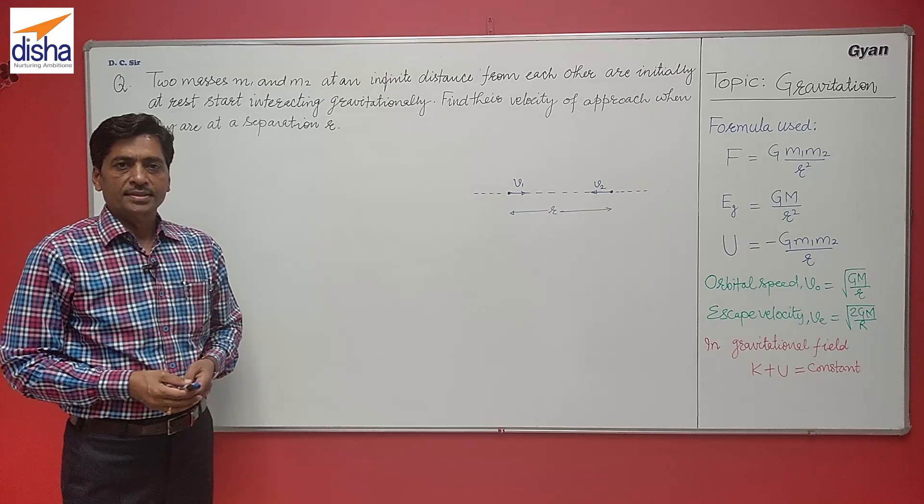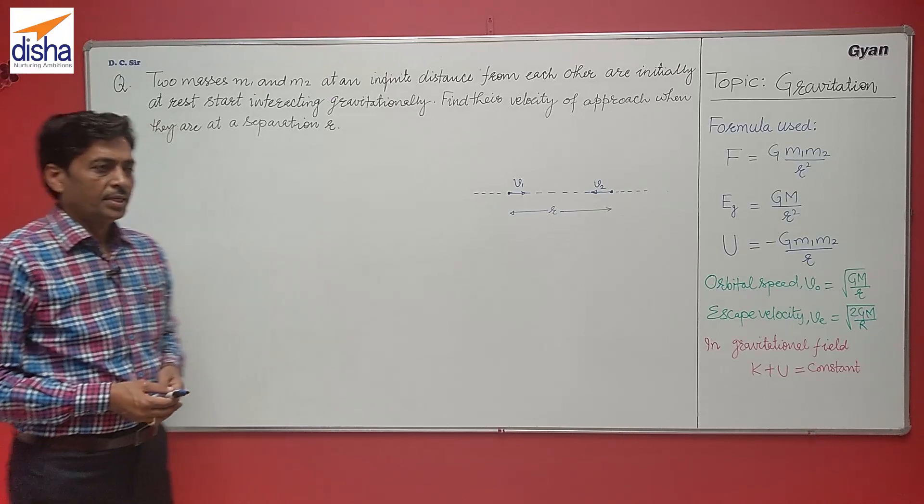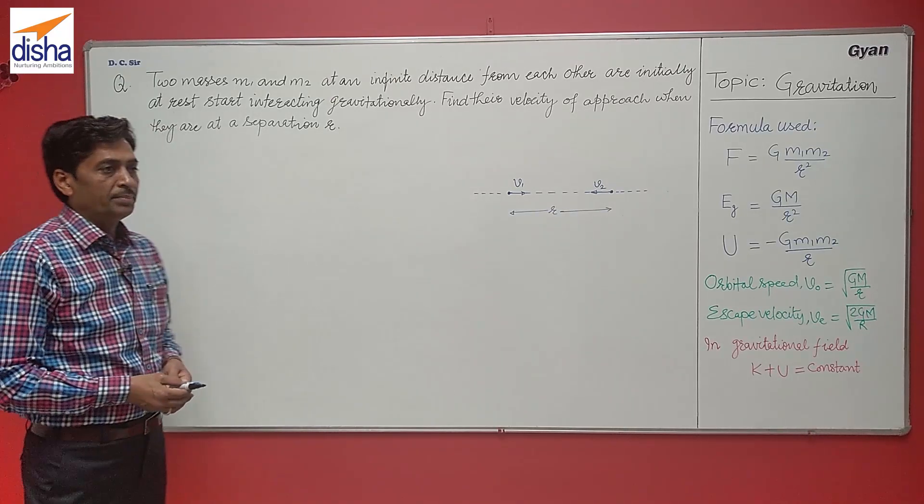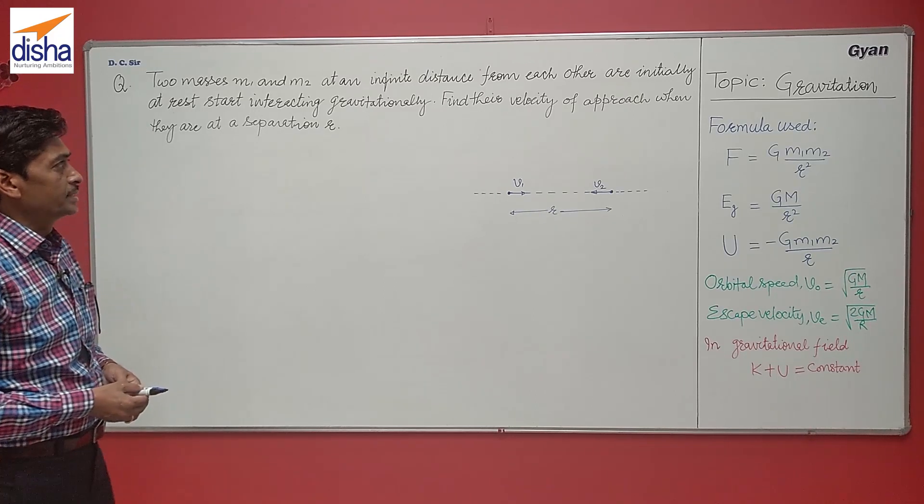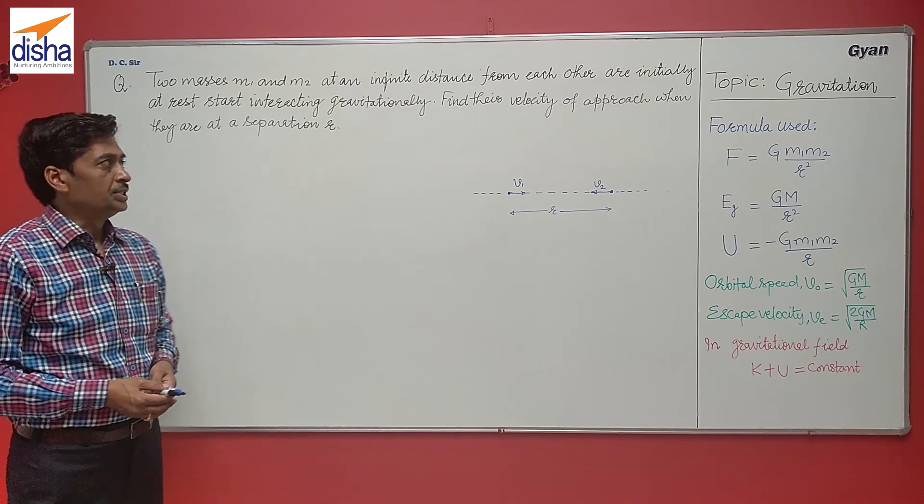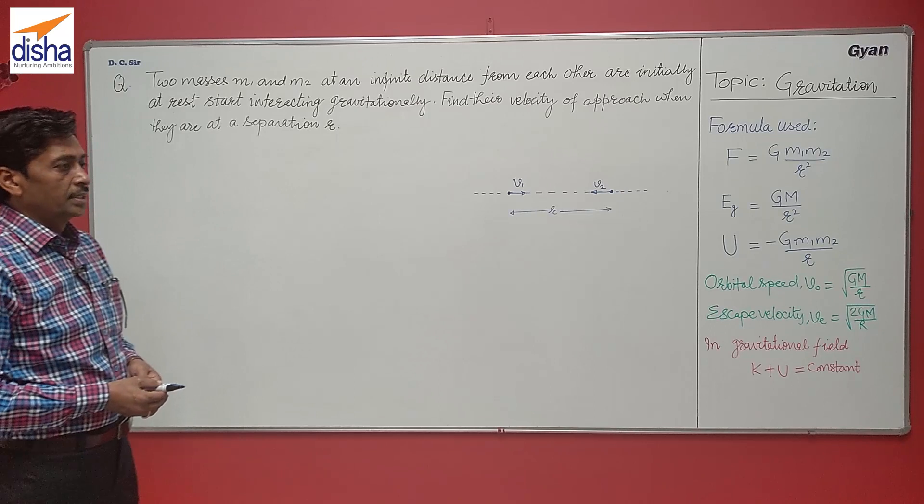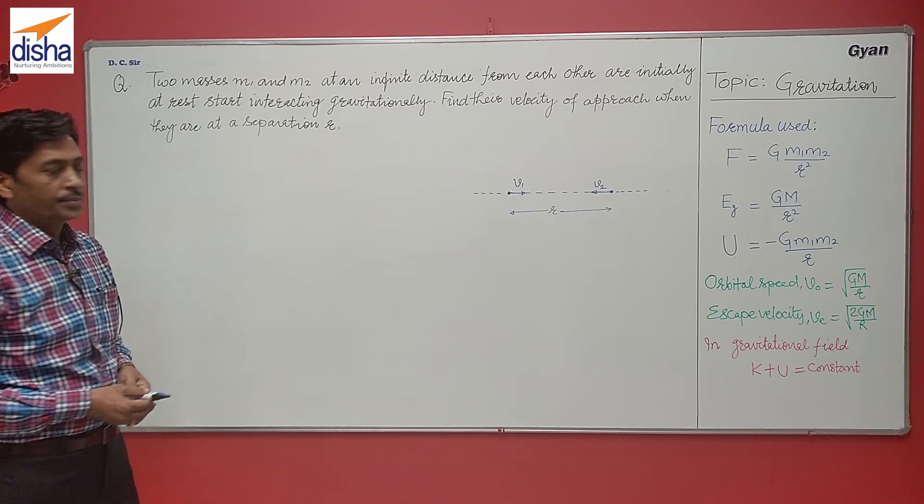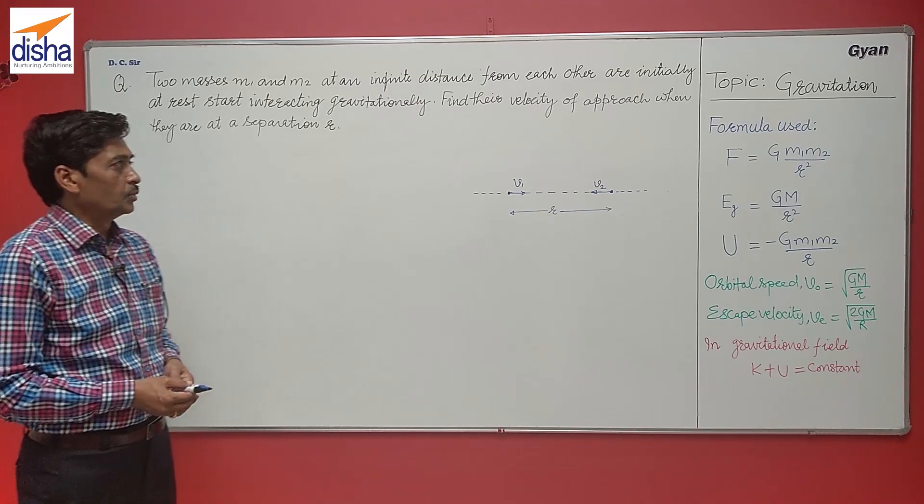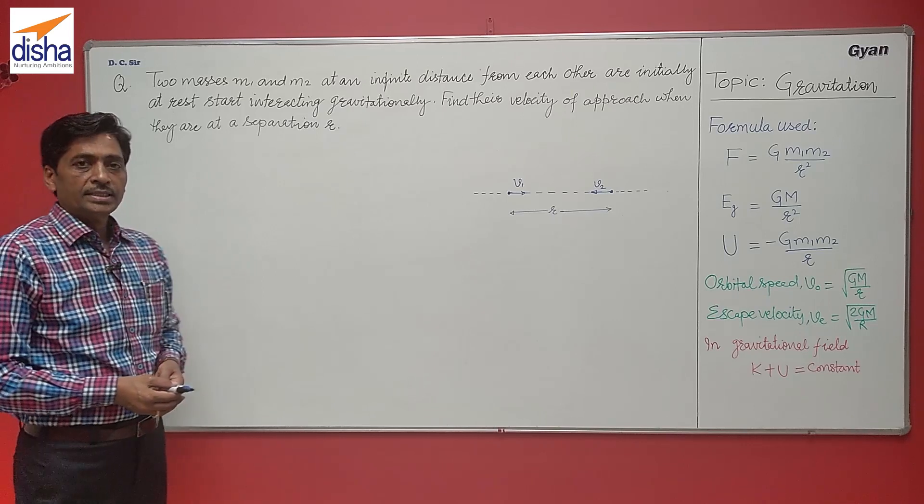I am going to discuss a problem of gravitation. Two masses, M1 and M2, are at an infinite distance from each other. Initially, they start interacting gravitationally. Find their velocity of approach when they are at a separation R.